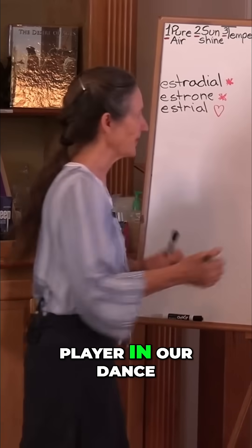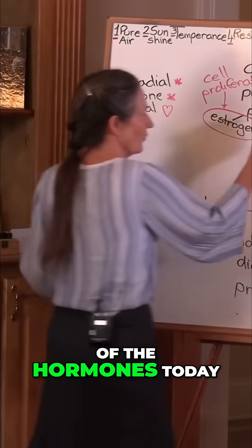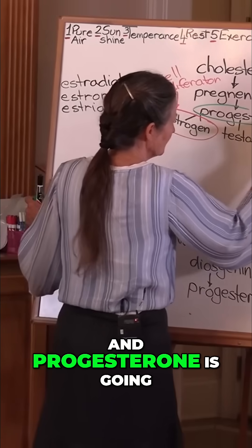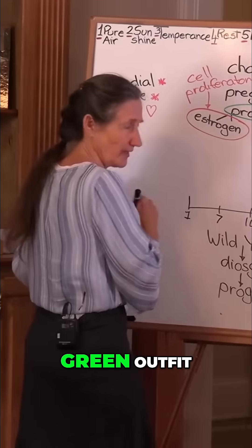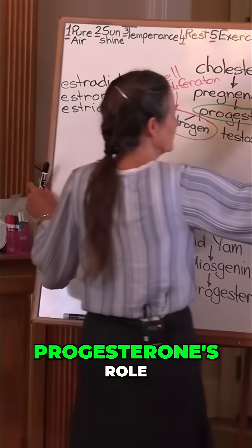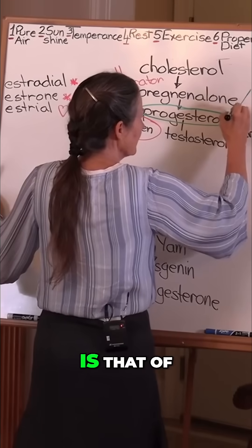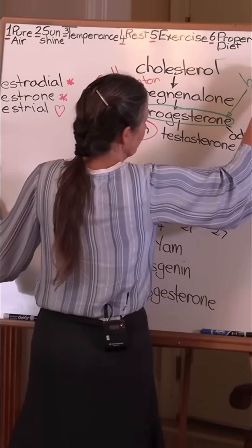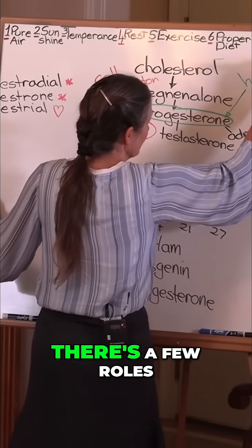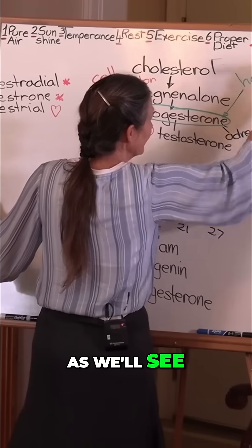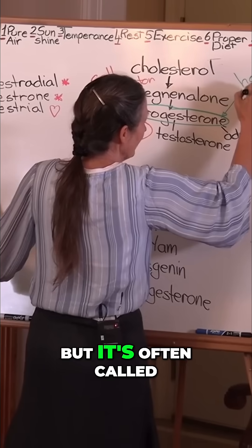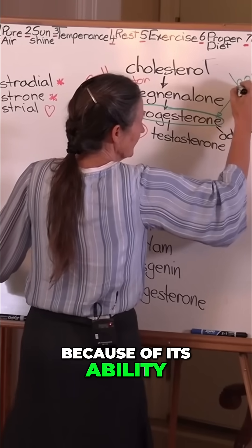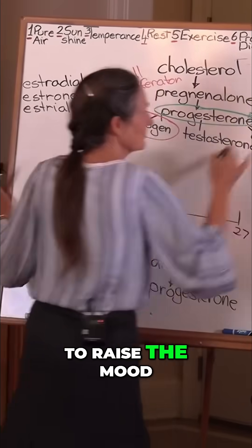Progesterone is the other player in our dance of the hormones today, and progesterone is going to be wearing a green outfit. Progesterone's role is that of a happy hormone — there are a few roles as we'll see, but it's often called the happy hormone because of its ability to raise the mood.